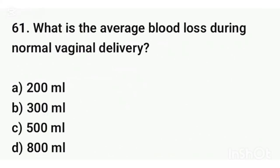Question number sixty-one. What is the average blood loss during normal vaginal delivery? The correct answer is option C: 500 ml.